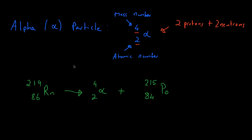One last thing to mention on alpha is that this alpha particle - sometimes you'll see it written as helium-4, because if you had to look in the periodic table, an atom with a mass number of four and a proton number of two actually coincides with the element helium. So an alpha particle is basically a helium atom. I prefer to write it using the alpha symbol to show that it's alpha emission, but you might see it written as helium instead - both are fine.